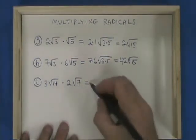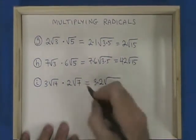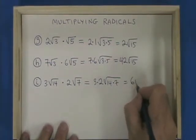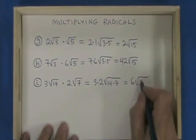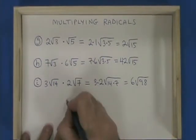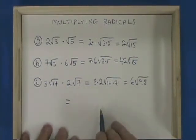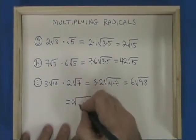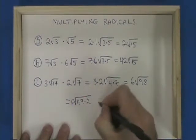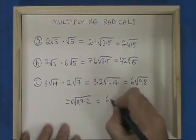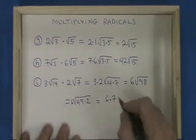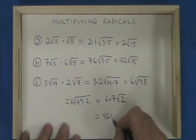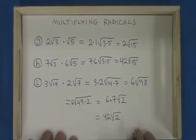Here we have 3 times 2, radical of 14 times 7. 3 times 2 is 6, and 14 times 7 is 98, so we have 6 root 98. 98 has a factor that is a perfect square, which is 49. So we have 6 root 49 times 2, which is 6 times 7, root 2. The square root of 49 is 7, which comes outside. The final answer is 42 root 2. This is how you multiply radicals.